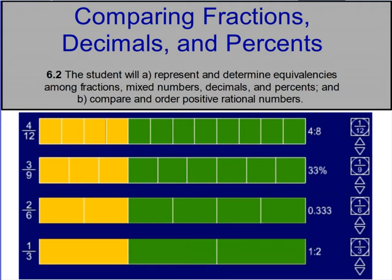Today's lesson is about comparing and ordering fractions, decimals, and percents. In some previous lessons, we learned how to convert fractions, decimals, and percents to change one into another form. We also learned how to show representations for fractions, decimals, and percents. Today we're going to use what we already know to help put them in order from least to greatest or greatest to least.